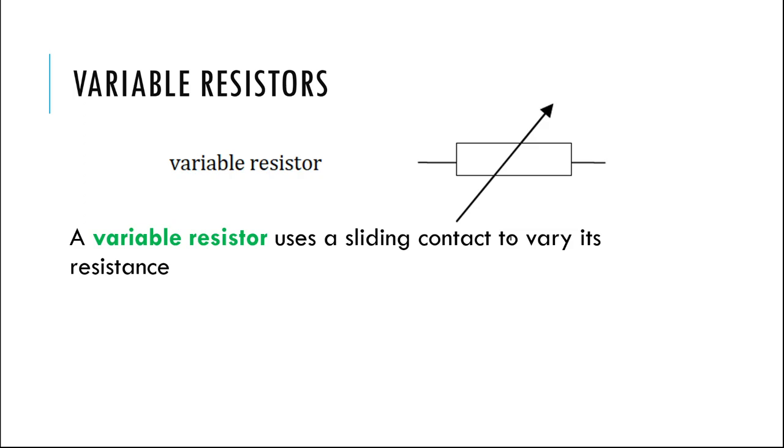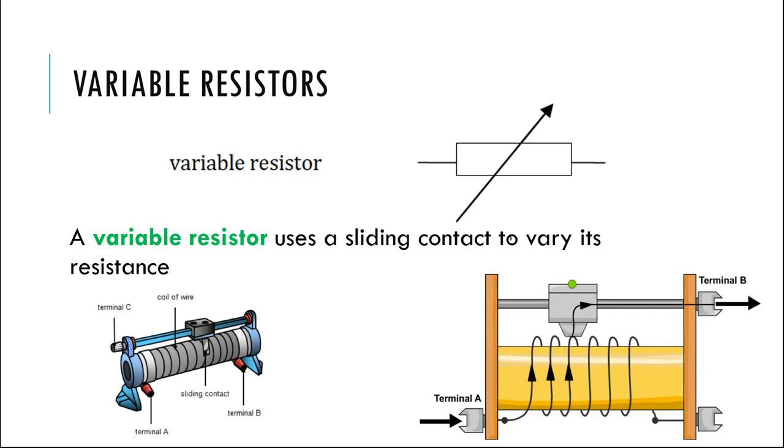This right here is what we call a variable resistor. A variable resistor is pretty much what it sounds like. It's a resistor whose resistance you can change. Usually there's like a slider, a little piece that you can move back and forth, similar to like a dimmer switch, that you can adjust the resistance of your resistor.